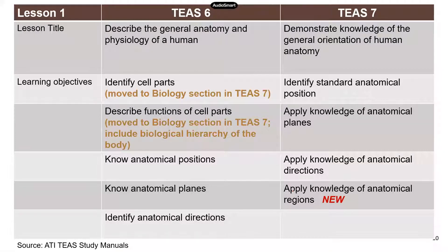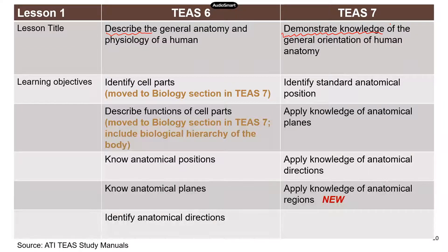I made a table comparing the differences for this particular lesson between the two versions. You can see the lesson titles are a little bit different. In TEAS 6, it's just describing general information. In TEAS 7, they say you have to demonstrate your knowledge of the general orientation of human anatomy. So learning is at a more advanced level — instead of just memorizing the terms, now you have to know what the terms mean and be able to apply your knowledge to solve problems.